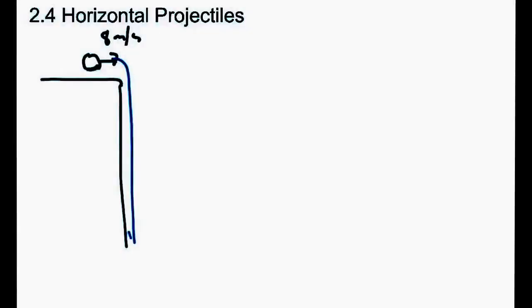Let's suppose we have an object and we're going to throw it 8 meters per second horizontally off the top of a cliff. The first thing we have to make sure we're aware of is what the path of the object is going to be. Because it's moving horizontally, it's not just going to fall straight down. That horizontal speed is going to make it go outwards, but gravity is going to start pulling it down faster and faster, so it should follow a curved path.